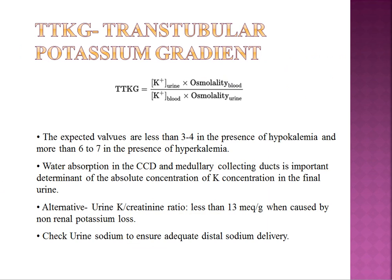An important clinical tool is the TTKG — transtubular potassium gradient. When investigating hypo- or hyperkalemia, beyond serum electrolytes and urine potassium and sodium, the TTKG helps determine whether there is renal potassium loss. The TTKG accounts for two variables: dietary potassium intake, and urine concentration. If the urine is concentrated, potassium appears higher; if dilute, it appears lower. To correct for this, urine and plasma osmolality are incorporated into the formula to calculate TTKG.